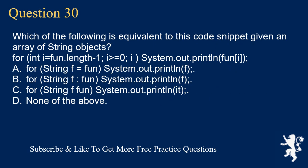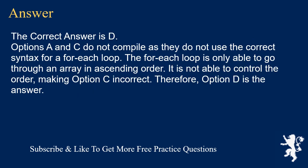Question 30. Which of the following is equivalent to this code snippet given an array of string objects? for (int i = fun.length - 1; i >= 0; i--) { System.out.println(fun[i]); } Options include various for-each loop attempts. D. None of the above. The correct answer is D. Options A and C do not compile as they do not use the correct syntax for a for-each loop. The for-each loop is only able to go through an array in ascending order; it cannot control the order. Therefore, option D is the answer.